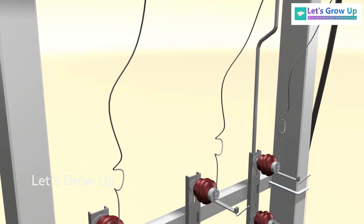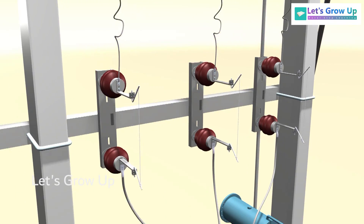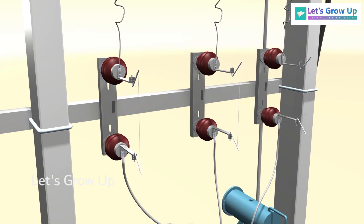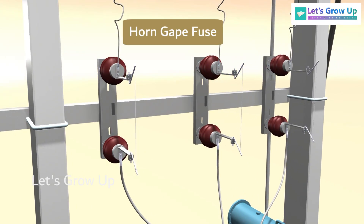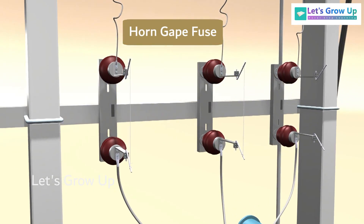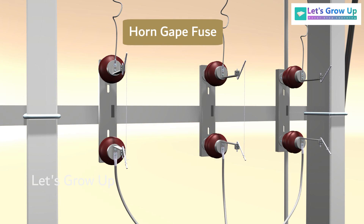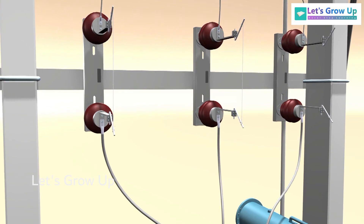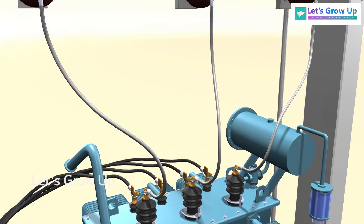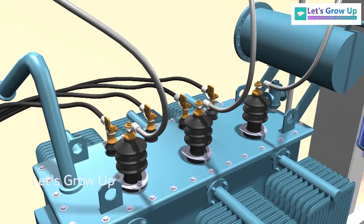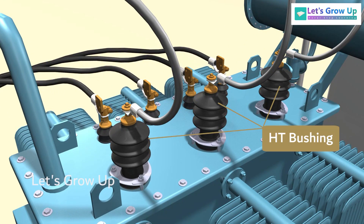Further, the A-B switch is connected to the fuse. These are the horn-gap fuse; sometimes you can also see a drop fuse. The high-voltage connection is then made to the transformer HT bushing.